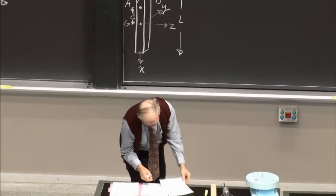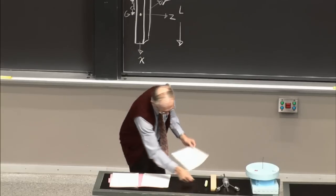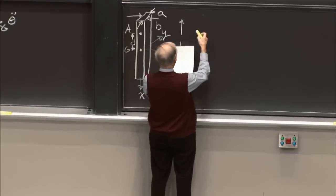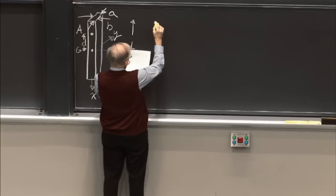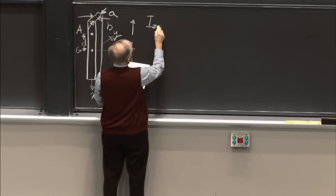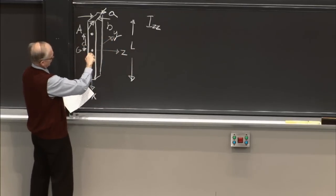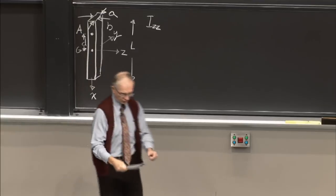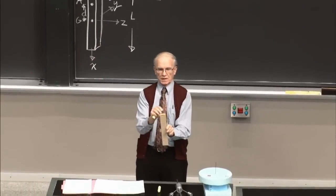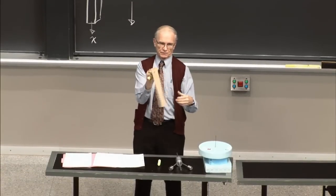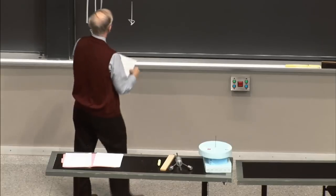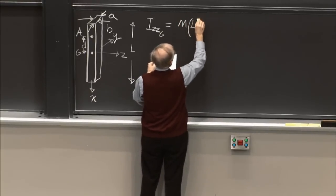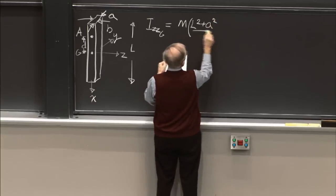For bodies like this, you can look up properties in any dynamics textbook. The I_zz with respect to G equals M(L² + A²)/12. We're going to spin this thing around the Z axis. I'll give dimensions: L = 32.1 cm, A = 4.71 cm, B = 1.25 cm, and D — the offset where I drilled the hole — is 10.2 cm.